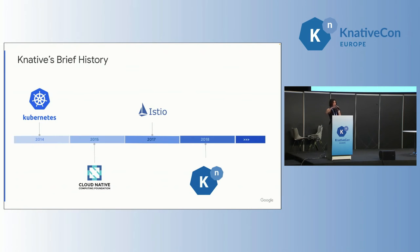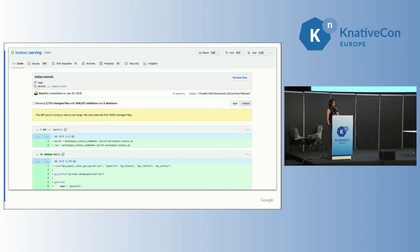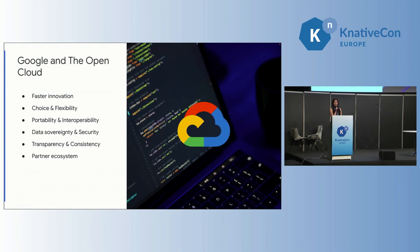I did some digging into the original design docs and the goals for the project. By the way, initially the Knative project was called Ella Frost — just a small fun fact for you. The original design goals were to have something very familiar for Kubernetes users that would cover the tasks of building containers, deploying and scaling workloads, managing events in applications at scale, and that were also conformant. And that is how Knative was born. The first commit to the Knative repository happened on January 30th, 2018.